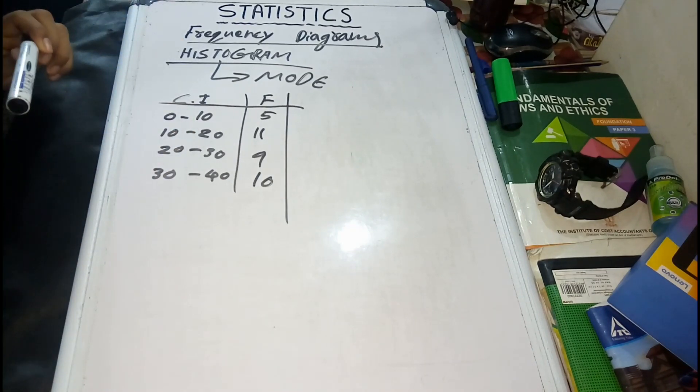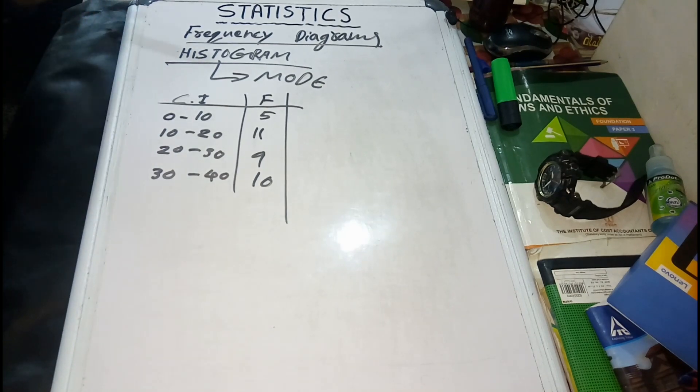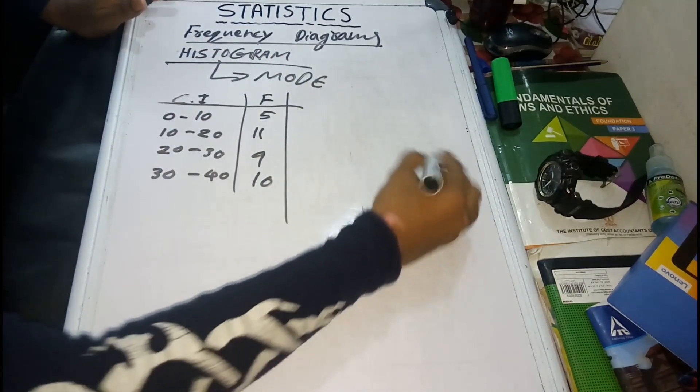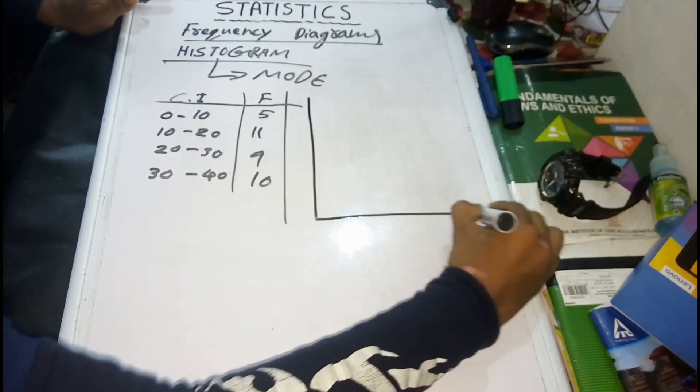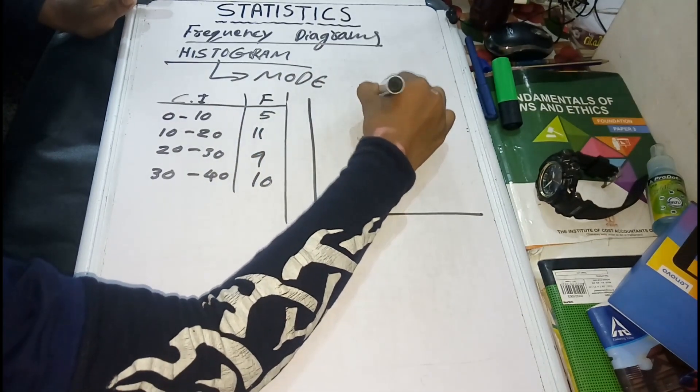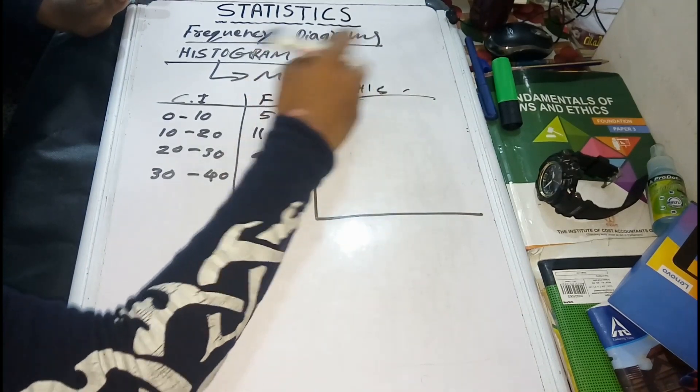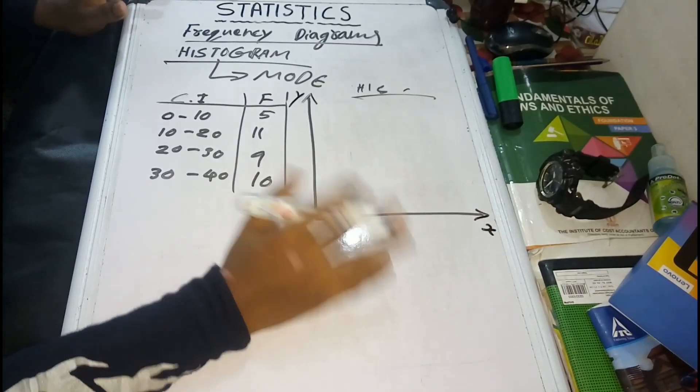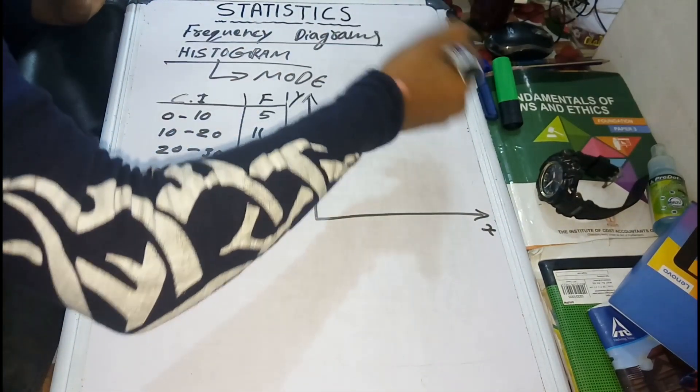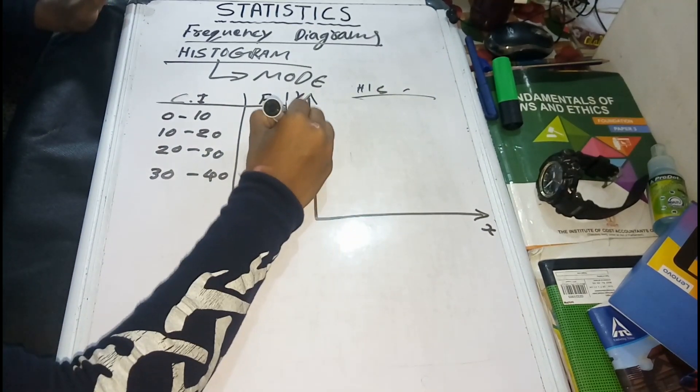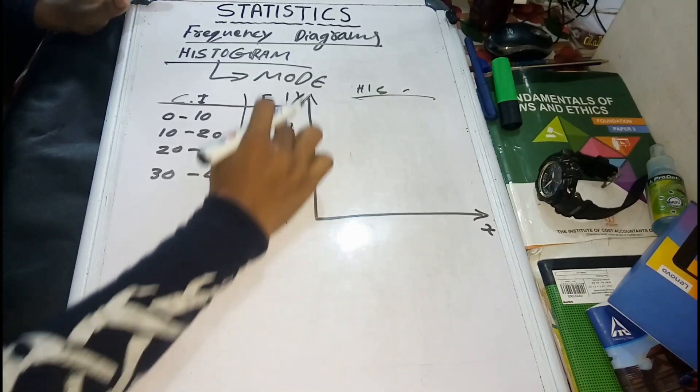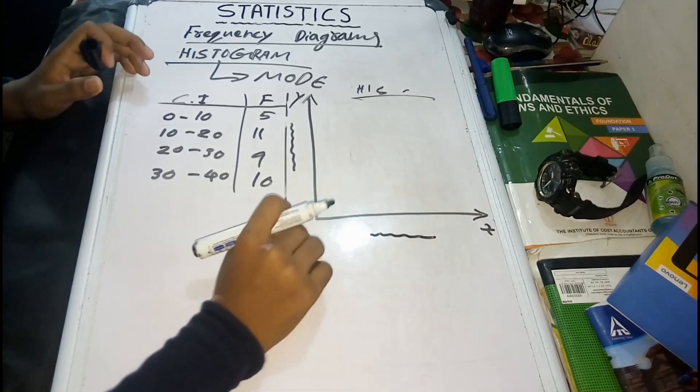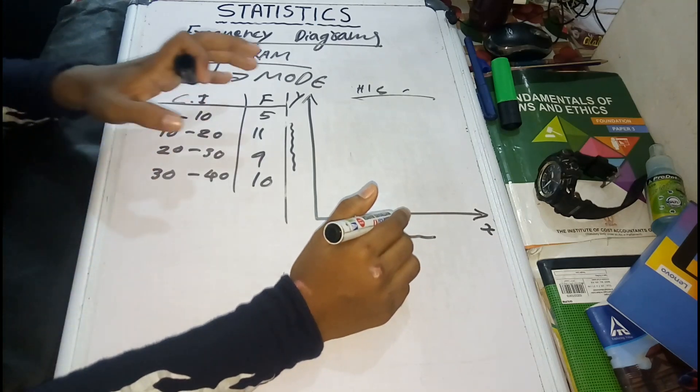Then, now I am going to represent this graphically. So, histogram will have this here. You can add the histogram heading. Y axis, X axis. Then Y axis, frequency. Then class intervals.